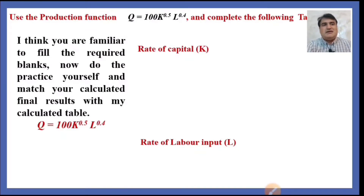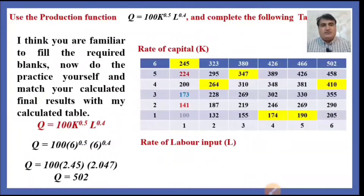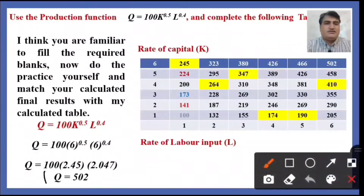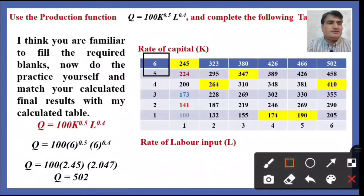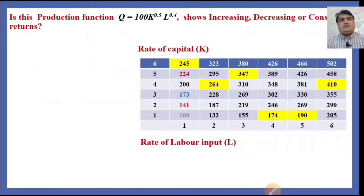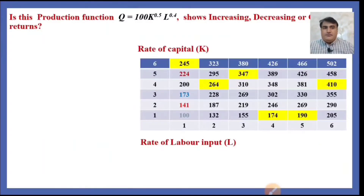One by one we have continuously filled this table. Finally, to save time, using the output function Q = 100K^0.5 × L^0.4, by employing 6 units of capital and 6 units of labor, the producer is going to receive 502 units of output. You can see that with 6 units of capital and 6 units of labor, the final output is 502 units. One task is now complete — we have filled the table.